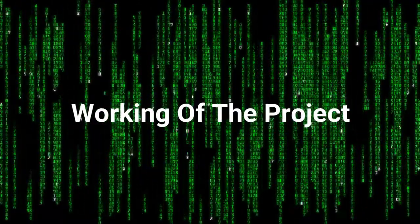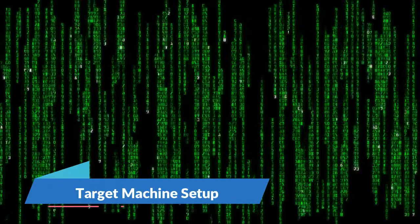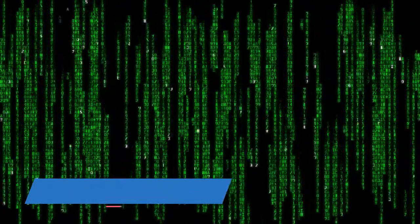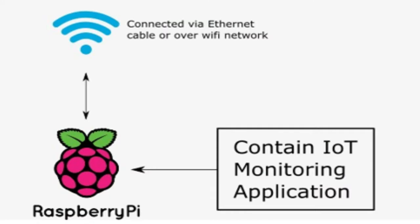Moving towards the working of the project: first we have a target machine setup on which we installed our vulnerable web application that is vulnerable to cross-site scripting and SQL injections, simulating sensor data on Raspberry Pi. It is a simple Python-based application that manually stores sensor data and uses an SQL database for data transactions.